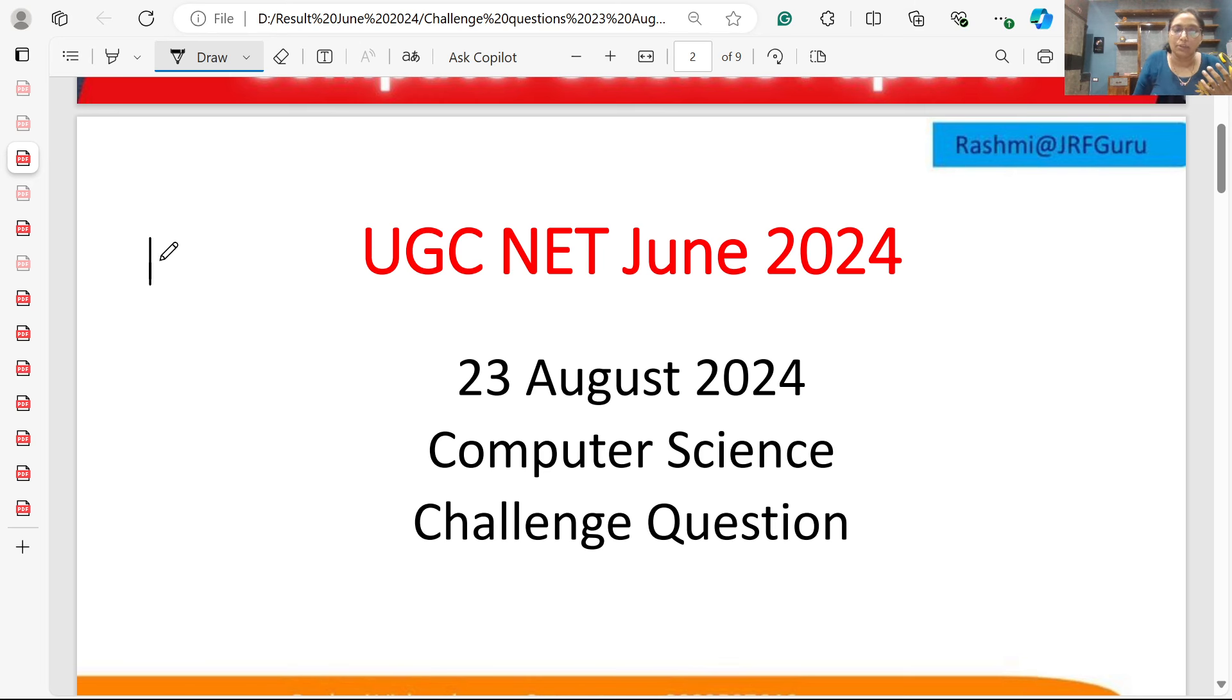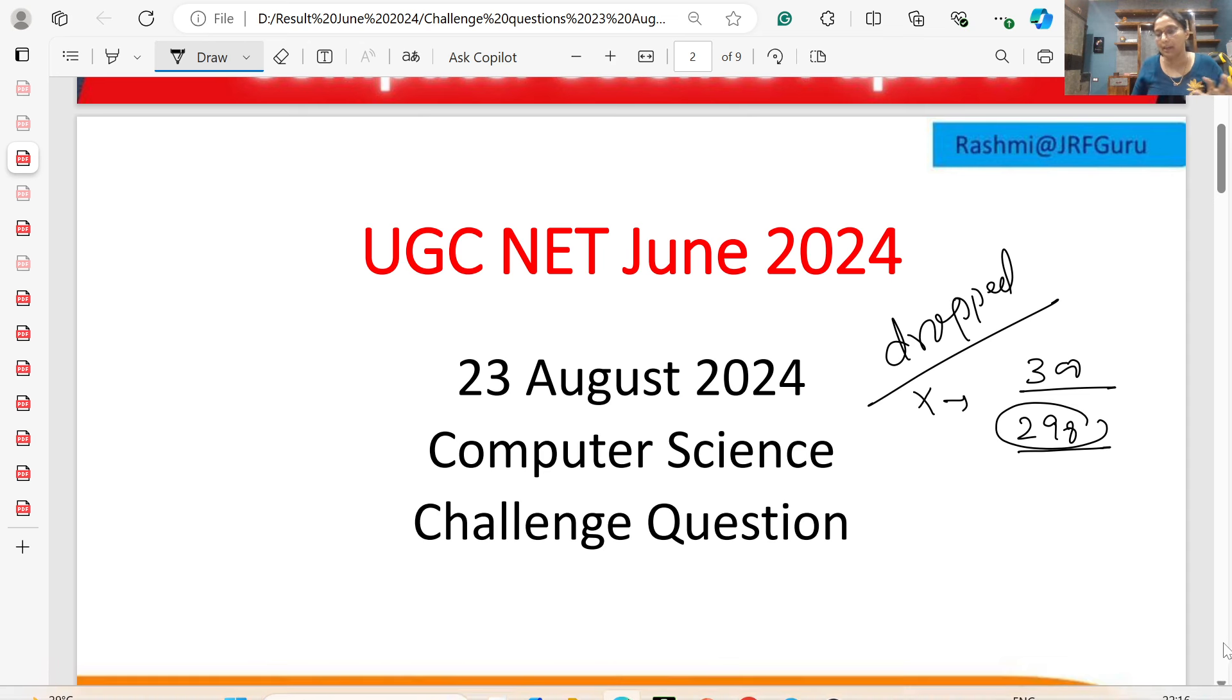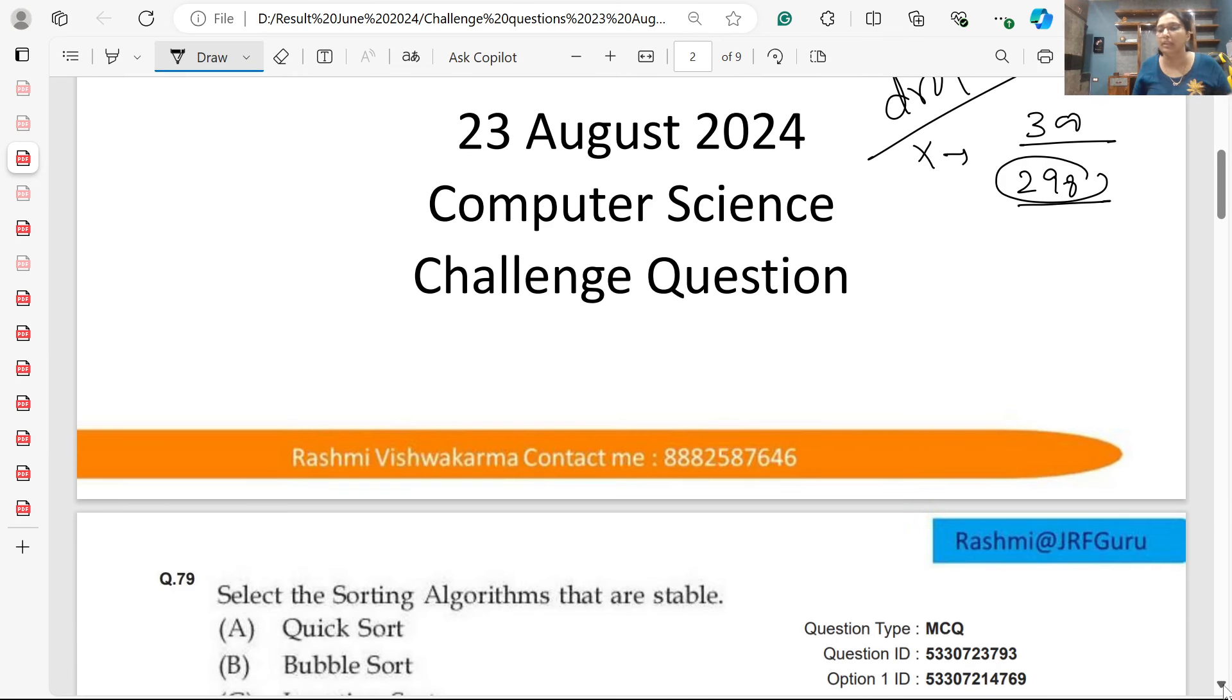If they don't have the benefit, they definitely get the benefit if the question is dropped. If you have a question with the wrong answer and you already answered it correctly, in that case you will definitely get the marks. But suppose that question is dropped, the calculation will be taken out of 298 instead of 300.